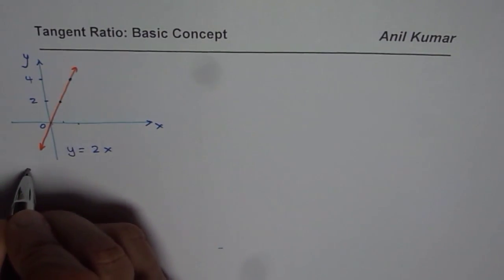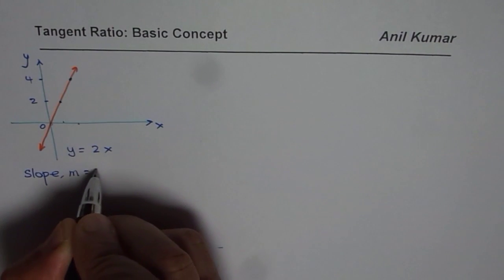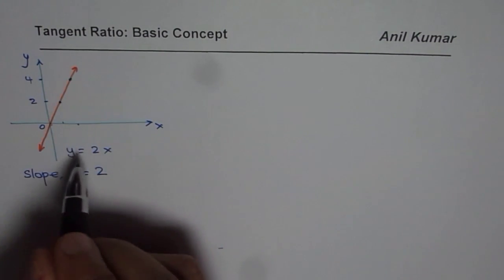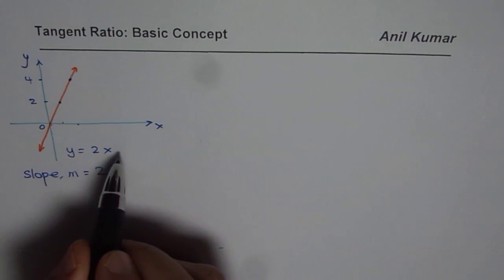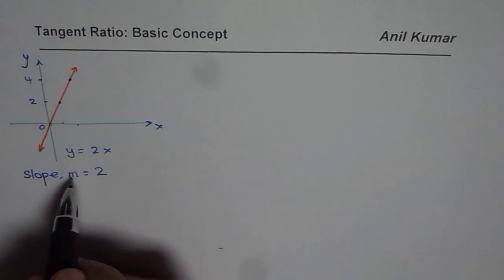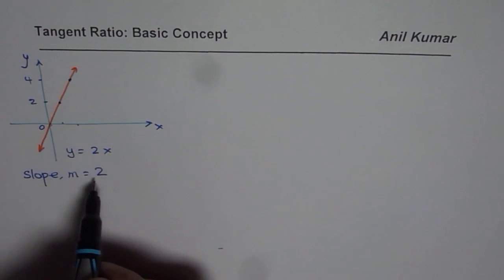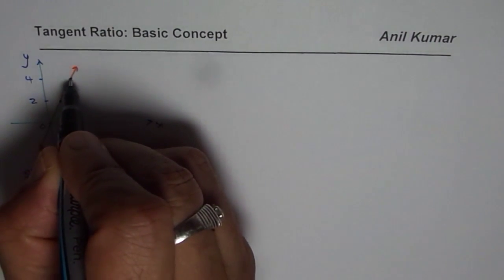Now the slope of this line is what? We say slope m is equals to 2. We know this equation is y equals to mx plus b where b the y intercept is origin for us. Slope is 2.